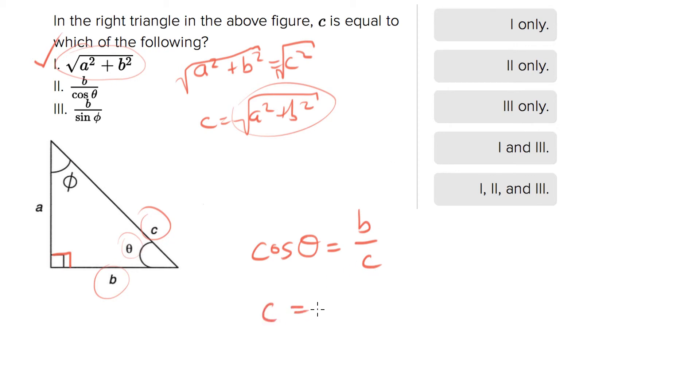And when you do that, you get c equals b over cosine theta. This is exactly what they have in statement two. So that one is also true.